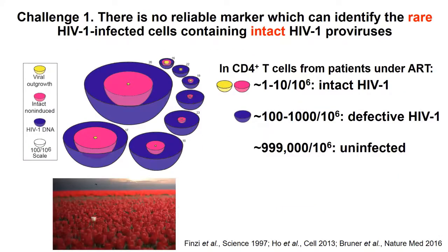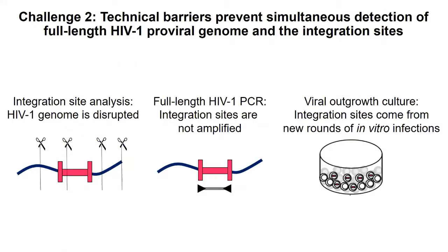To look at these cells, we really need to pull them out from patients and get in vivo answers, not in vitro. The first challenge is that there is no reliable marker to identify infected cells from HIV-infected individuals. The second challenge is that although we can look at full-length sequencing, when we use nested PCR we lose the information of the integration site, and when people use shearing methods to look at HIV integration sites, the shearing disrupts the HIV proviral genome. So we can't get both full-length sequence and integration site information together.